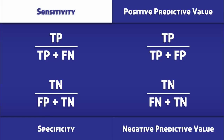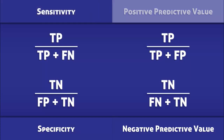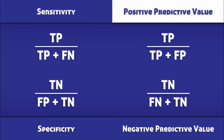Sensitivity is calculated by dividing the number of true positives by the total number of people with the condition. The positive predictive value is calculated by dividing the number of true positives by the total number of positive tests.